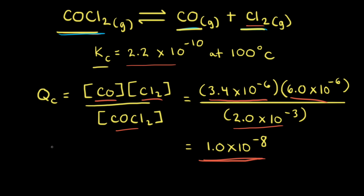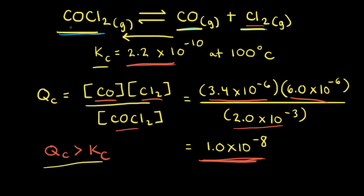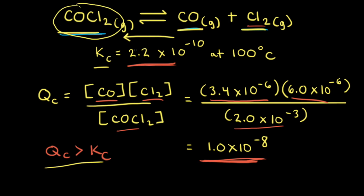In this case, QC is greater than KC because QC equals 1.0 × 10⁻⁸ and KC equals 2.2 × 10⁻¹⁰. When QC is greater than KC, we have too many products and not enough reactants. Therefore, the net reaction goes to the left, increasing the amount of COCl₂. The reaction will continue to go to the left until QC equals KC and equilibrium is reached.